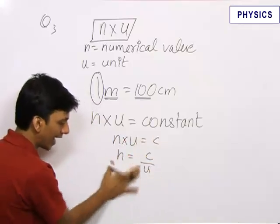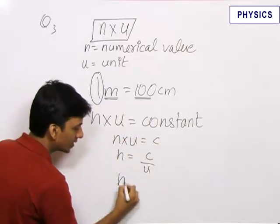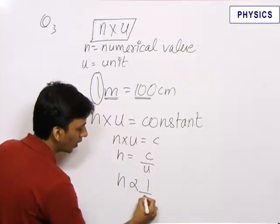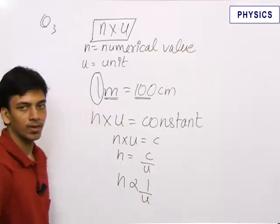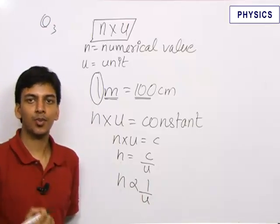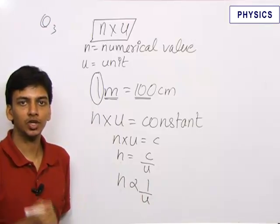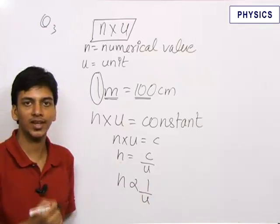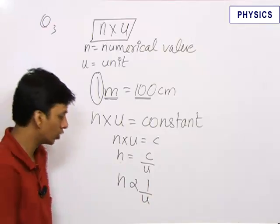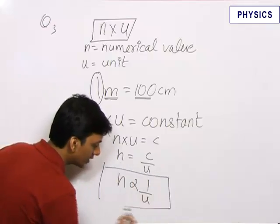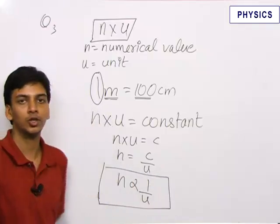So, what we can say from here is that n is directly proportional to 1 upon u. Basically, n is inversely proportional to u and this is the relation between numerical value and the unit in an expression for a physical quantity. So, the final answer stands as n is directly proportional to 1 upon u.